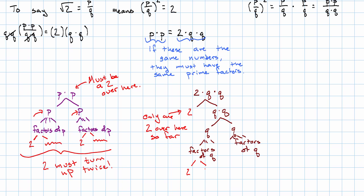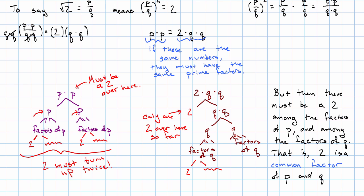There must be one among the factors of q. I could keep going this way, but I already have what I need. There has to be a 2 among the factors of p and also among the factors of q. That is, 2 is a common factor of p and of q.